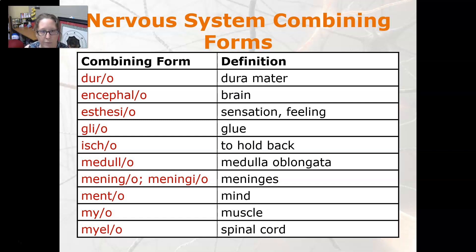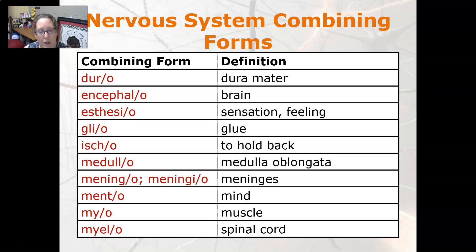Glio is glue, ischio is to hold back, medulla is medulla oblongata, meningio or meningio both refer to meninges, mento is mind, myo is muscle — but myelo is spinal cord.